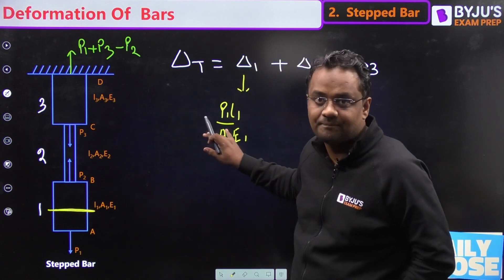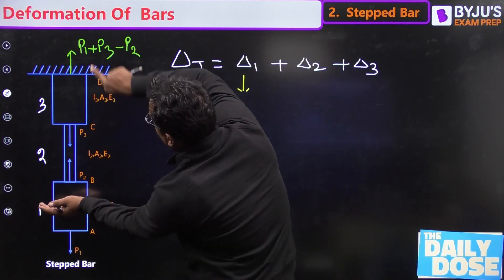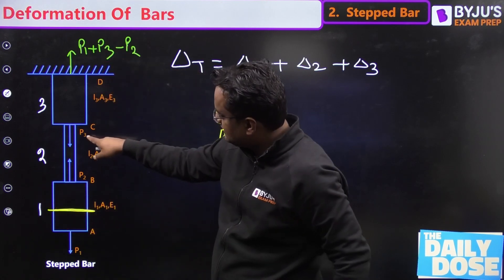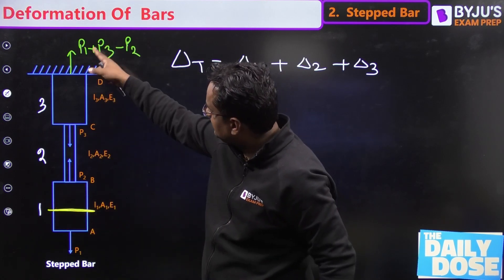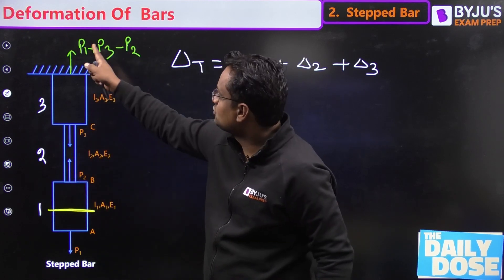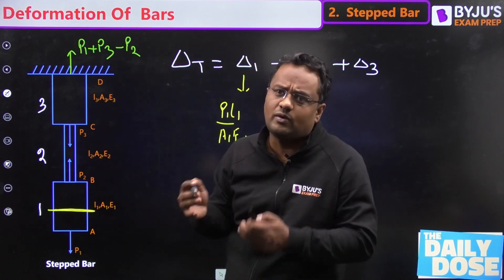If you see from top also guys, P1 plus P3 minus P2 is going upward away from my hand, away from the section, so plus. So P3 is coming, so minus P3, that will be cancelled out. Remaining is P1 minus P2. Again P2 is going above, that means plus. So P1 minus P2 plus P2, again it will be P1. So either you see from top or from bottom it will be same.